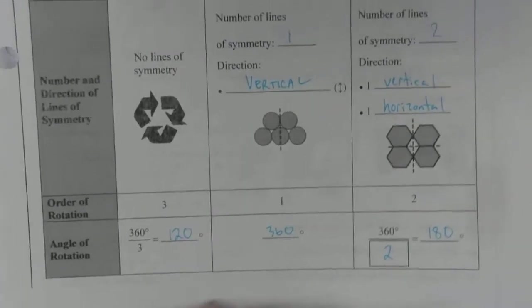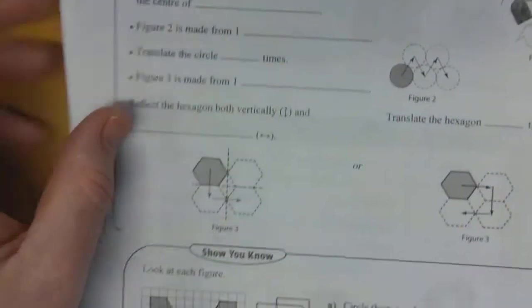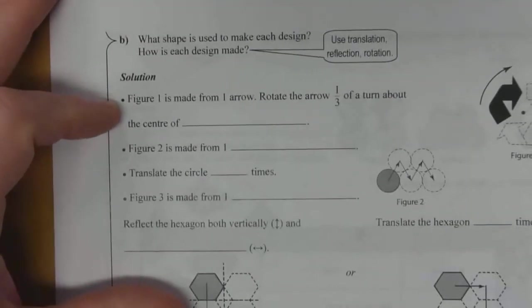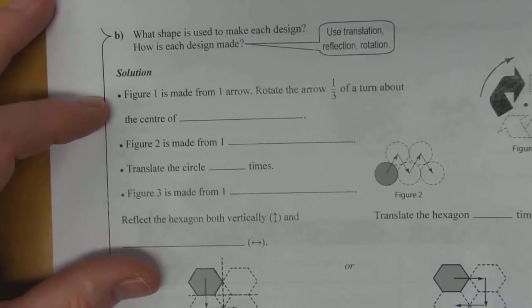You can assess rotational symmetry and lines of symmetry on any shape. Part B: What shape is used to make each design? How is each design made?